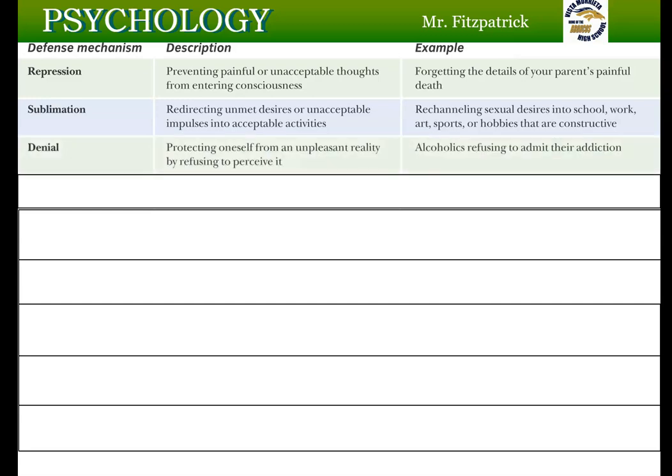The next is denial, which protects us from an unpleasant reality by refusing to perceive it. For example, alcoholics refuse to admit they have a problem — they say, 'I could stop drinking any time,' and deny they have an issue.